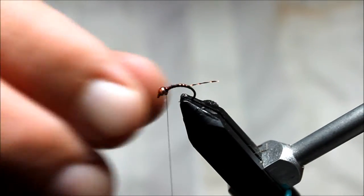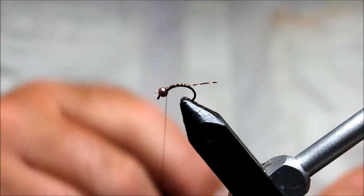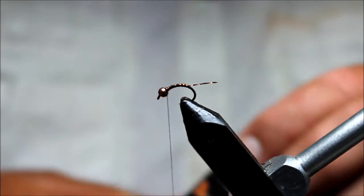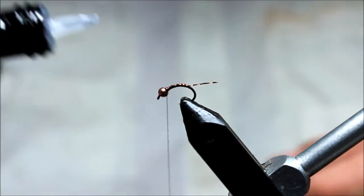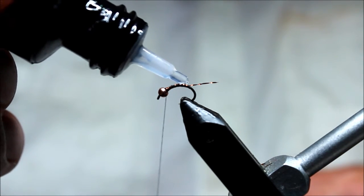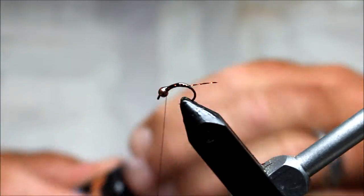Almost like a copper john. The crystal flash is not a very durable material; it will get chewed up pretty easily, and fish will be biting this fly, so count on that. So I like to apply a UV resin to that.